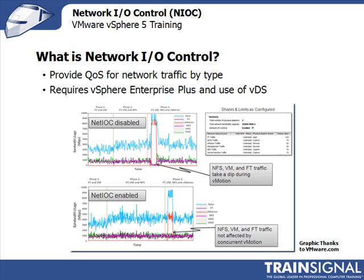For example, if you have a vMotion occurring, or multiple vMotions, that could actually slow down your virtual machine traffic. You don't want end user applications slowed down by perhaps a vMotion occurring or fault tolerance traffic. With Network I.O. Control, you can essentially throttle these different types of traffic and ensure that the highest priority traffic — primarily your application and storage traffic — gets the bandwidth it deserves.